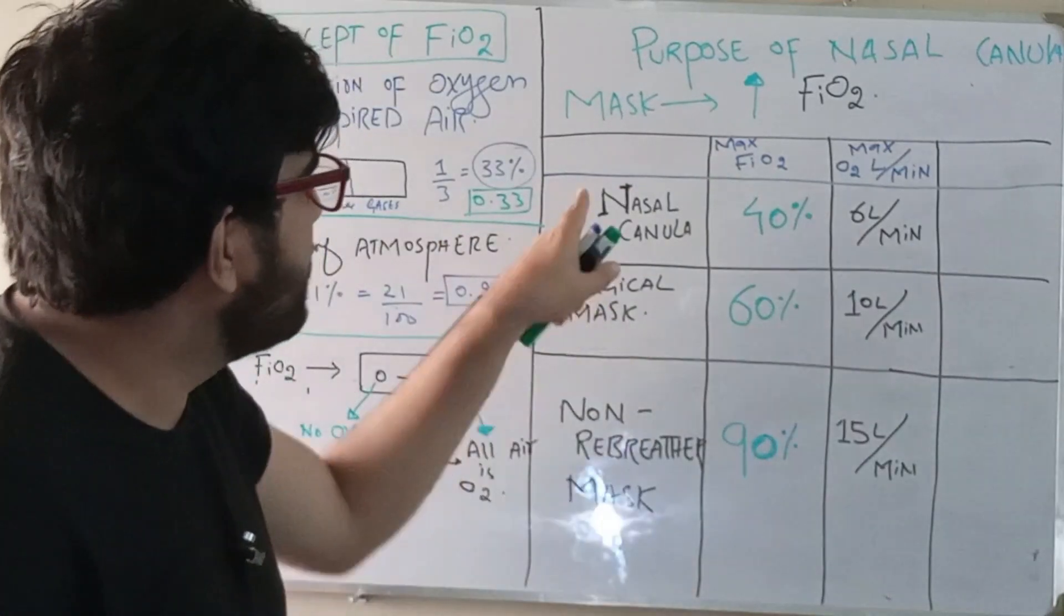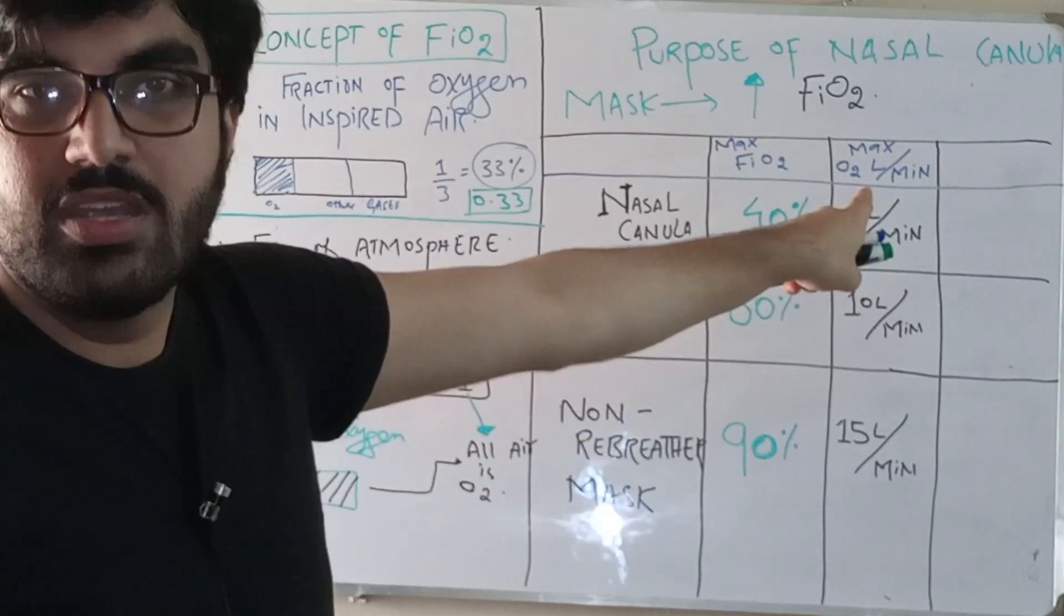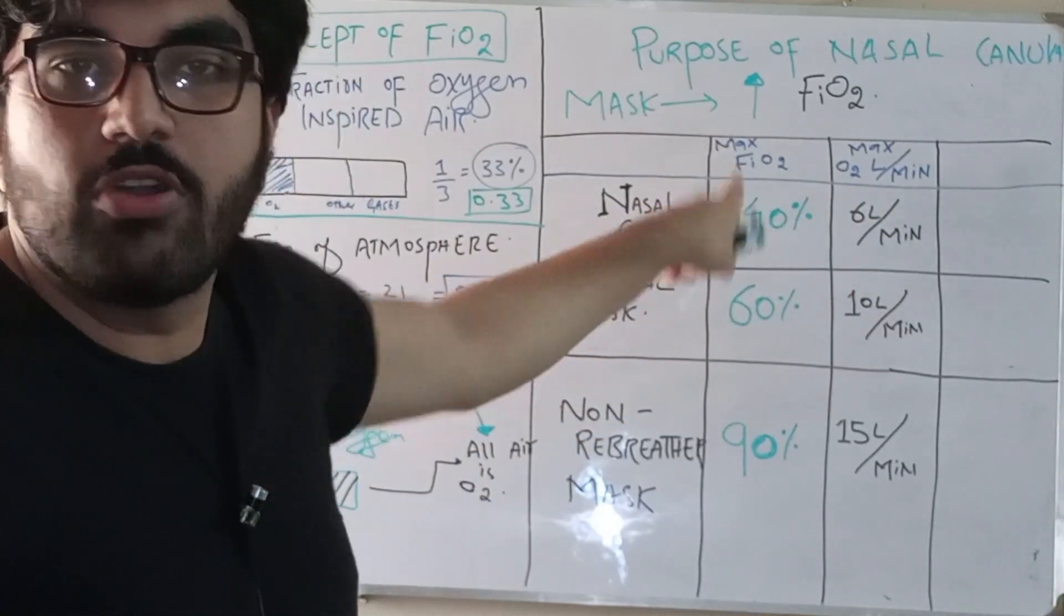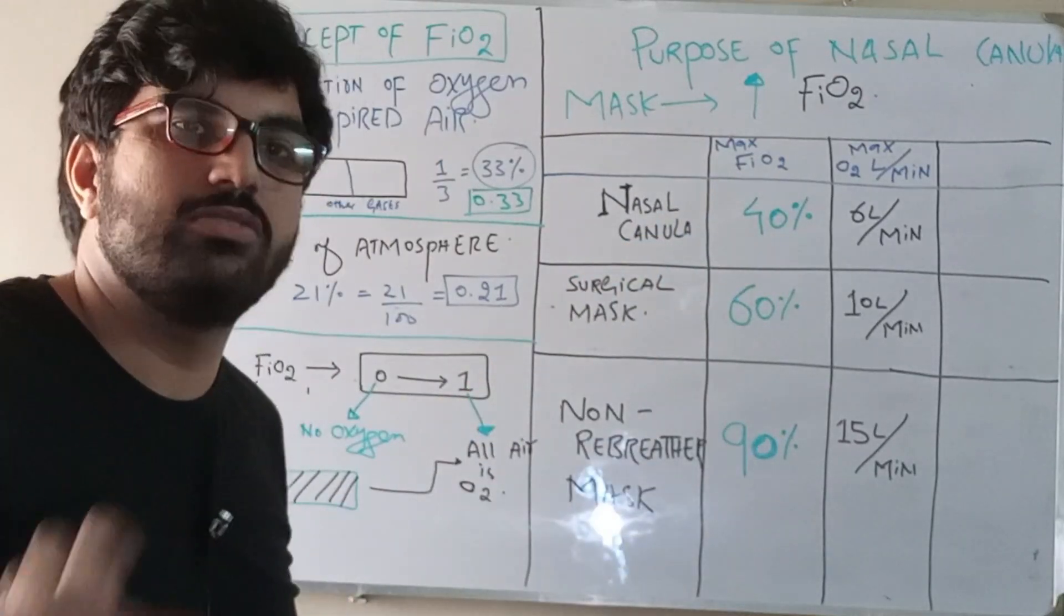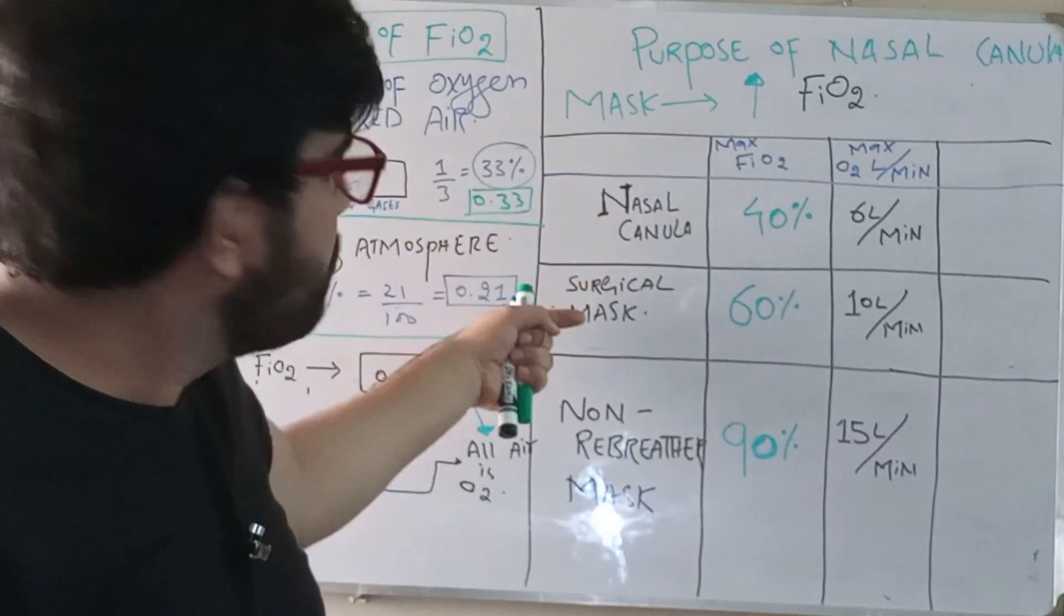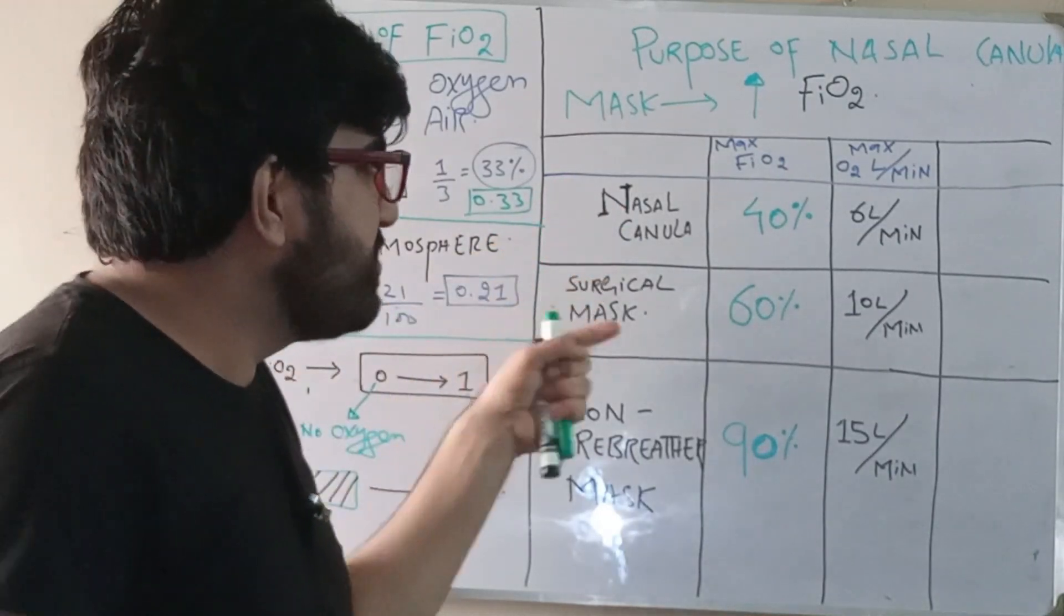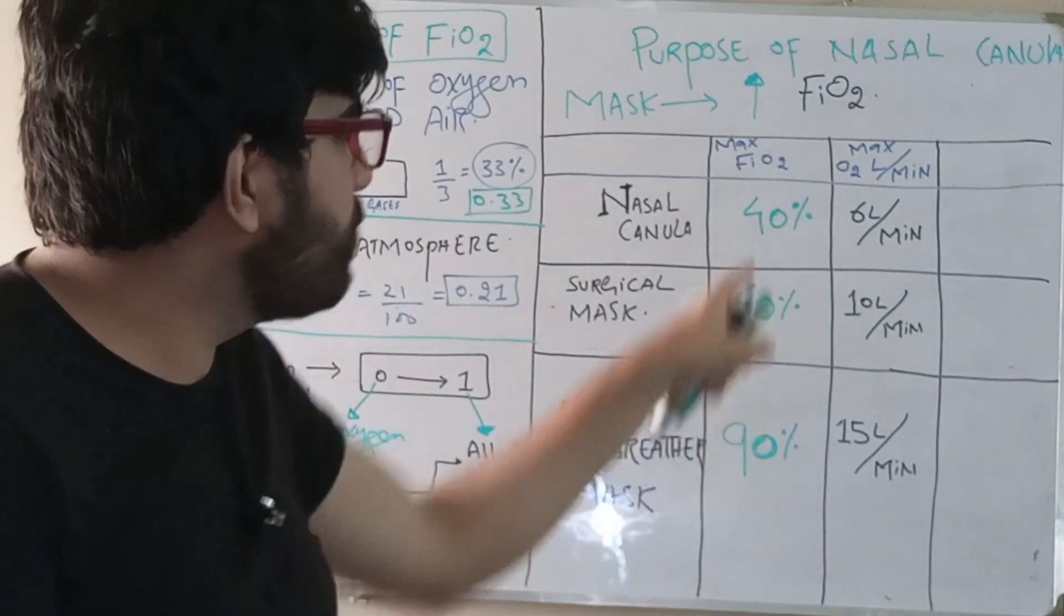So you give nasal cannula, you apply the nasal cannula and give six liters per minute of oxygen - you are giving FiO2 of 40%, but the patient is not achieving the target. What is the next step? Convert the nasal cannula to surgical mask. With surgical mask, you increase the FiO2 up to 60%.